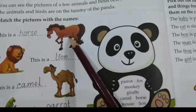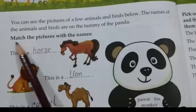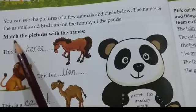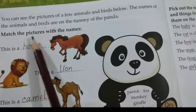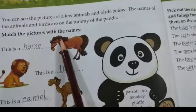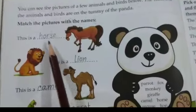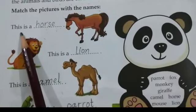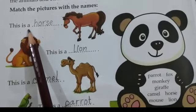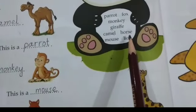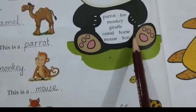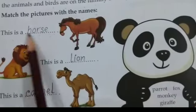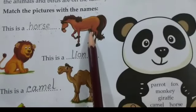What is this? Horse. So you will find the spelling of horse here and write it here. M-A-T-C-H. Match the pictures with the names. Now the first one: T-H-I-S, this. This means yeh. A means ek. This is a horse. H-O-R-S-E. You will write the spelling from here. This is a horse. Yeh ek ghoda hai.